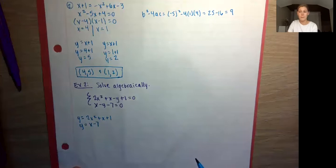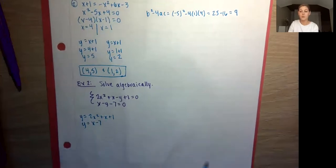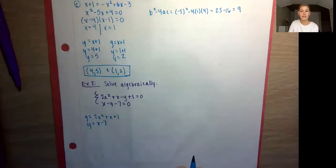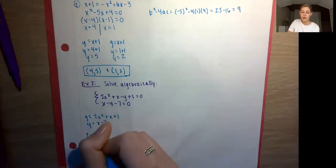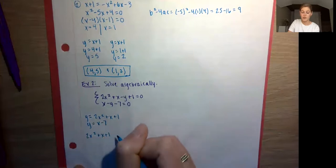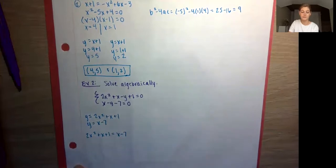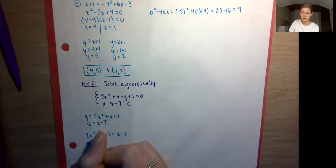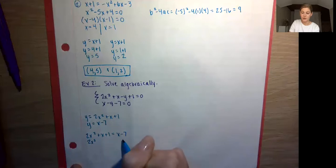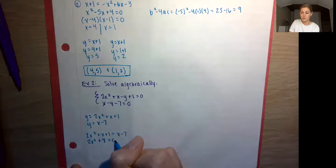Step two: set the equations equal. Both equal y, so 2x² + x + 1 = x − 7. Getting everything on one side: subtracting x from both sides cancels it out, and adding 7 gives us 2x² + 8 = 0.